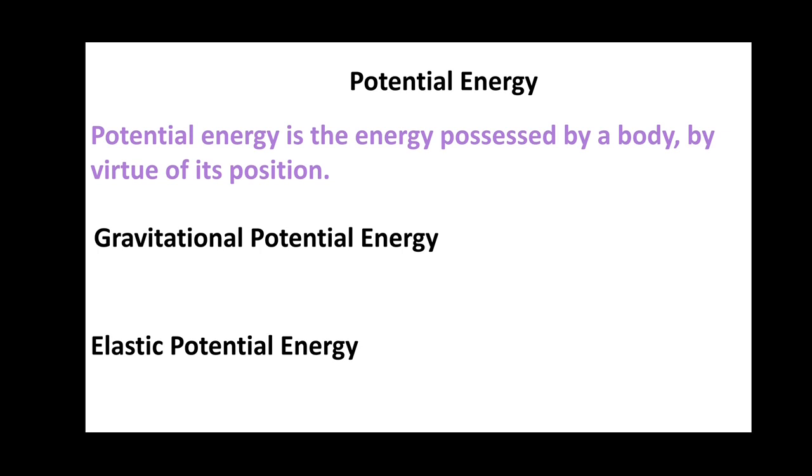Gravitational potential energy is the energy due to the raised position of an object. Examples are, a mango on a tree, a brick raised to a height, water stored in a reservoir or a dam having potential energy on to their height.